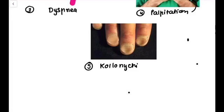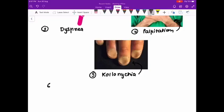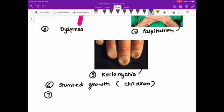Fifth is koilonychia. Here you can see the deformation of the nails. Next clinical manifestation is stunted growth, mainly seen in children, and also in some cases alopecia can be seen.